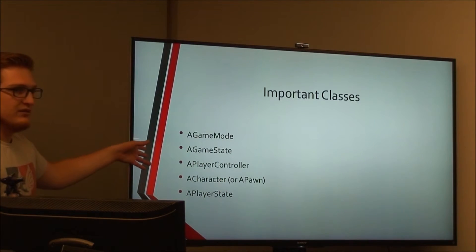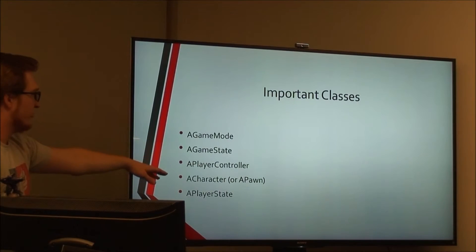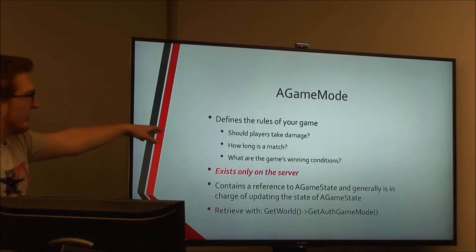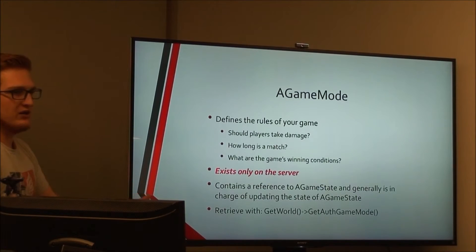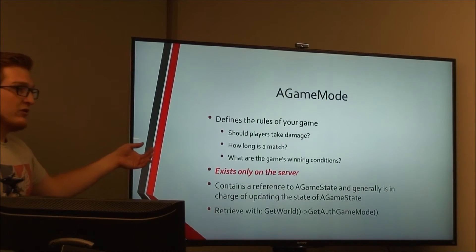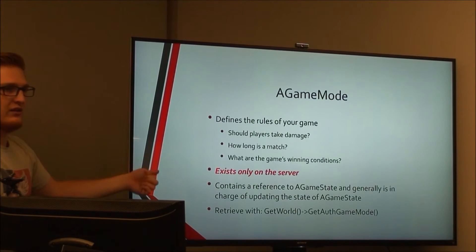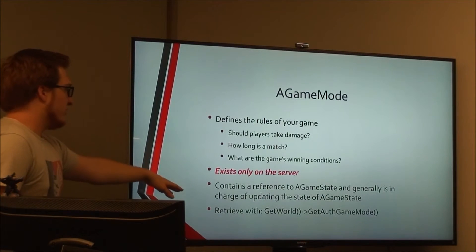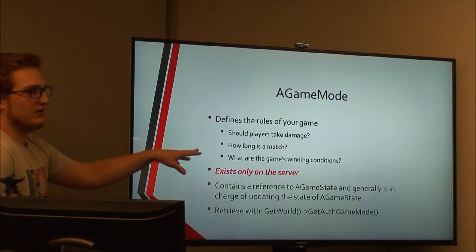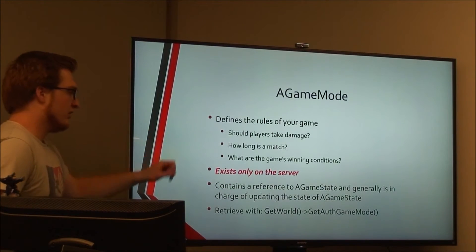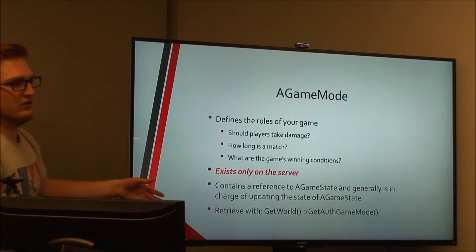Here are the most important classes for networking in Unreal: GameMode, GameState, PlayerController, Character or Pawn, and PlayerState. GameMode defines the rules of your game — things like whether players can take damage in pre-match, how long the match is, and winning conditions. The GameMode exists only on the server, so calling GetGameMode on a client returns null. That's important for security: only the server can determine whether the game ends or changes state. GameMode contains a reference to GameState and is generally the only thing that should update GameState directly. You call GetGameMode on World and it returns something on the server and nothing everywhere else.